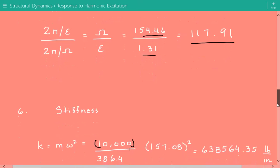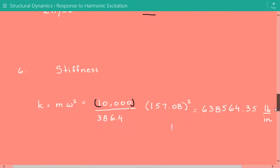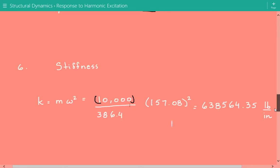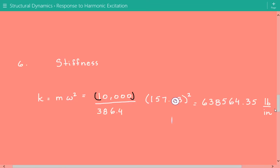Now we're going to calculate the stiffness. And the stiffness is equal to the mass of the system multiplied by the circular natural frequency of the system squared. So the mass is equal to the weight divided by g, gravitational acceleration. So here 10,000 pounds is our weight, and our gravitational acceleration is 386.4 inches per second squared.